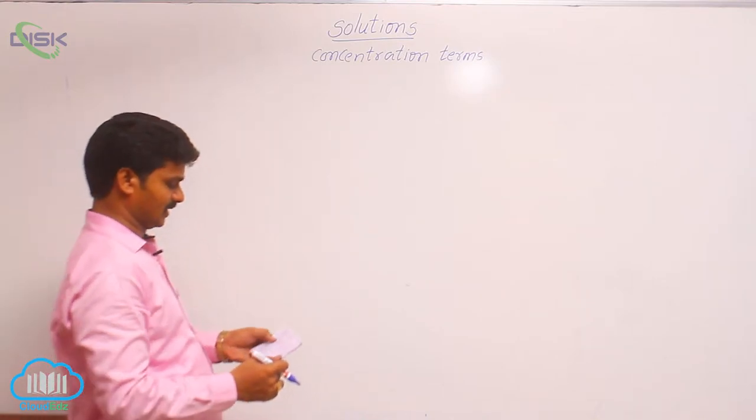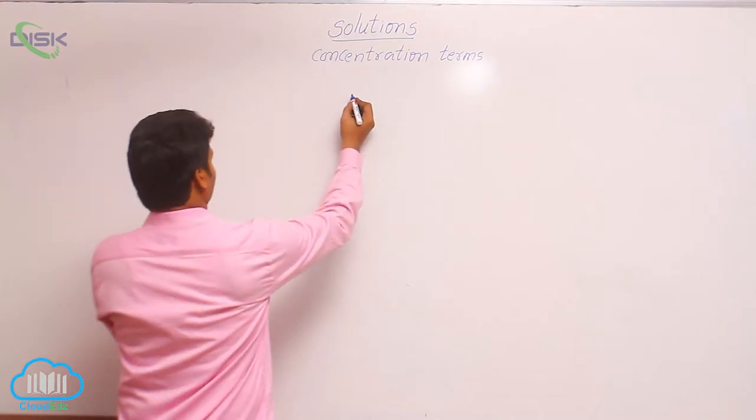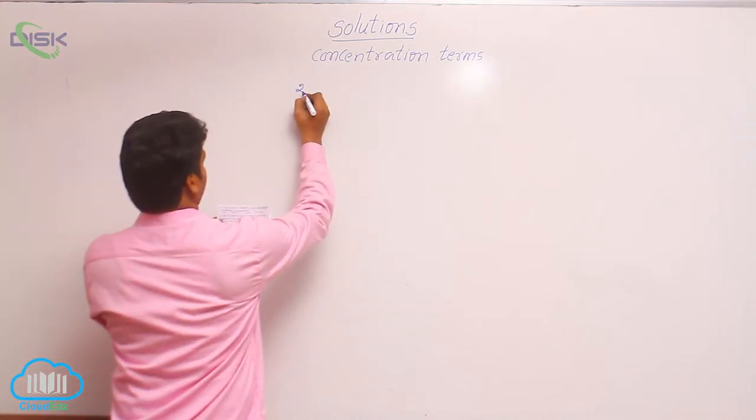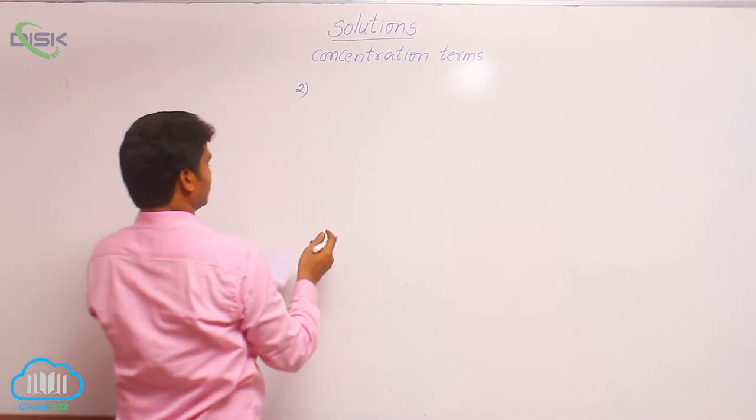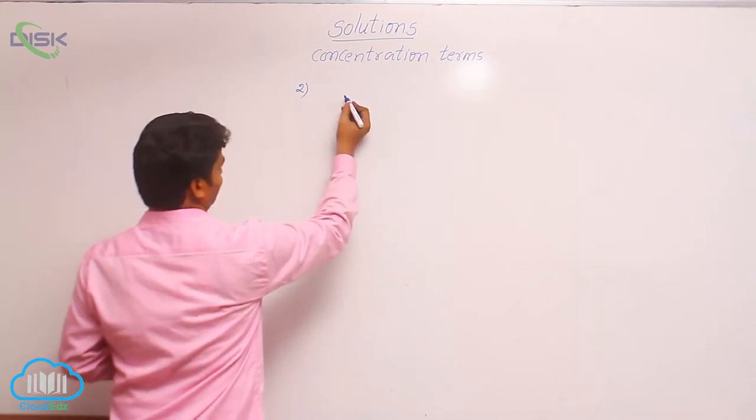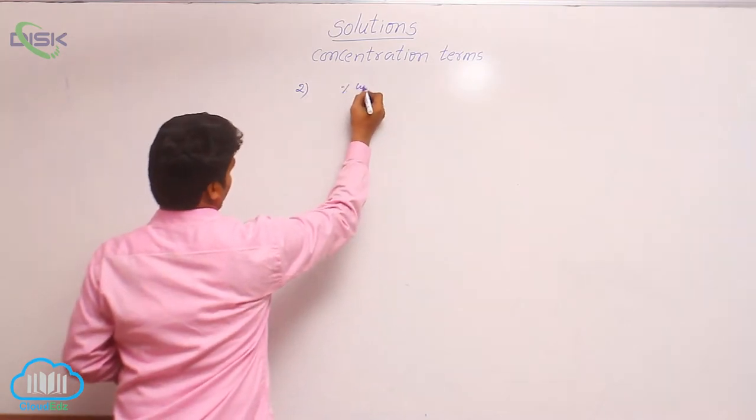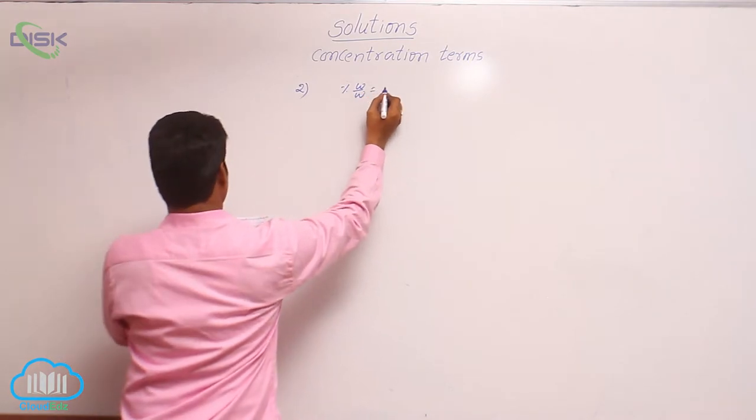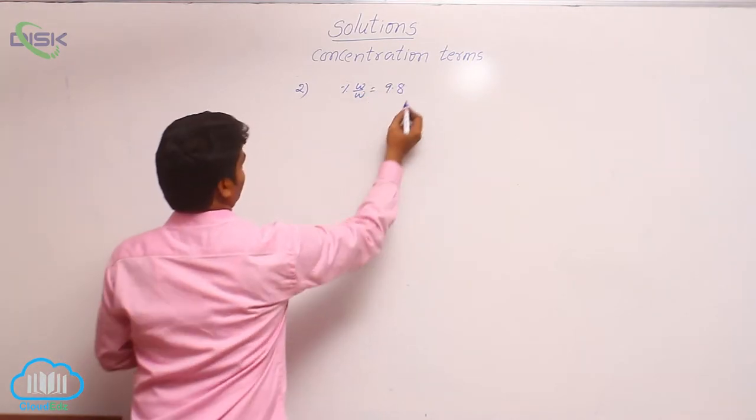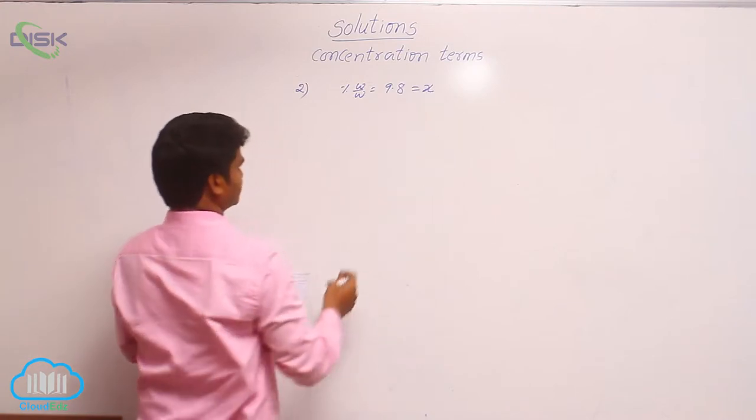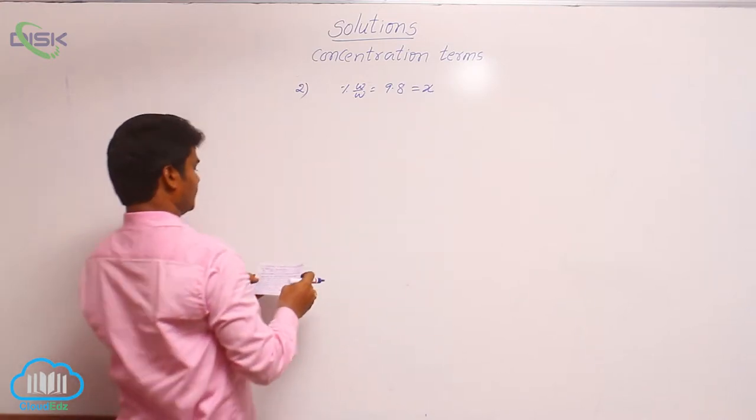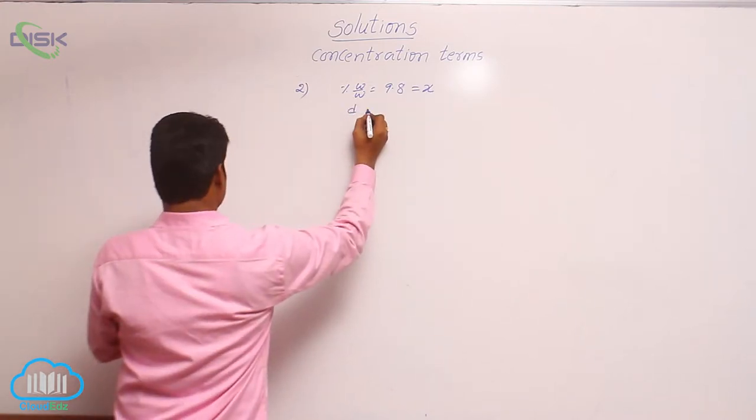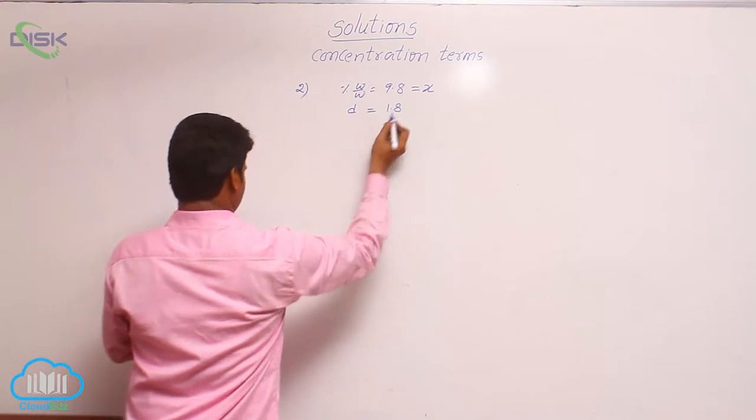See here which terms are given. In this percentage by weight is given. That means percentage weight by weight, it is given as 9.8. Let it be X. Similarly, specific gravity, that means density is given 1.8.